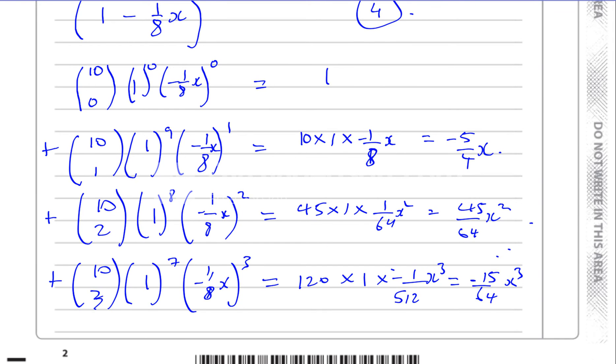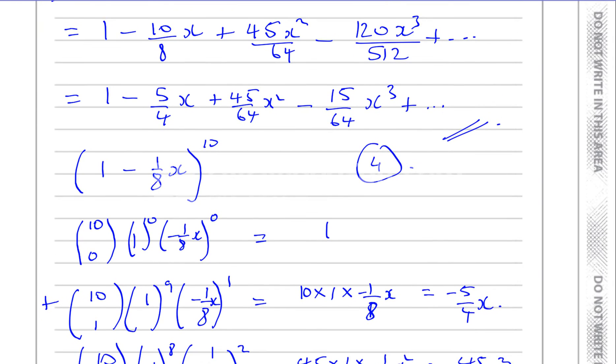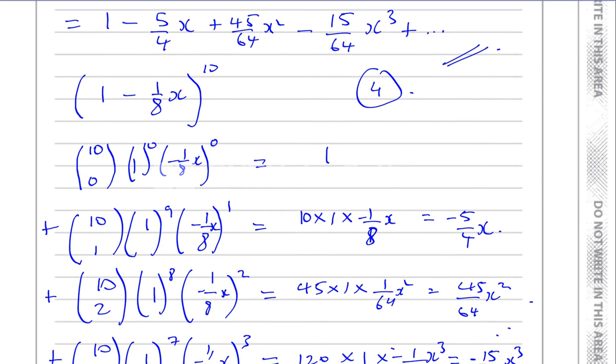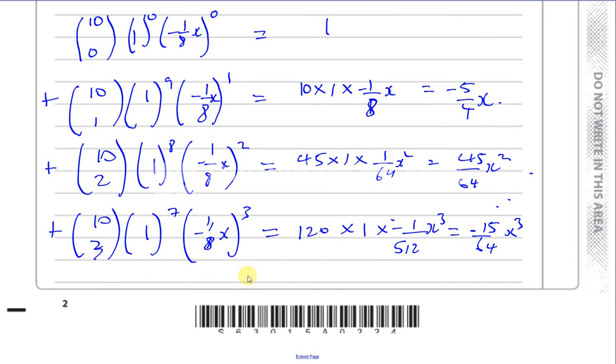So that's exactly what we had before. We had 1 minus 5 over 4x plus 45 over 64x squared minus 15 over 64x cubed. You have 1 minus 5 over 4x squared, wait, that's x, that's x squared, and that's x cubed. So 1 minus 5 over 4x plus 45 over 64x squared minus 15 over 64x cubed. And there we have our answer.